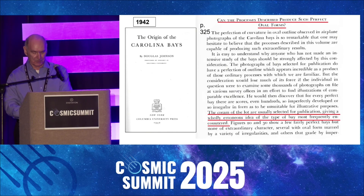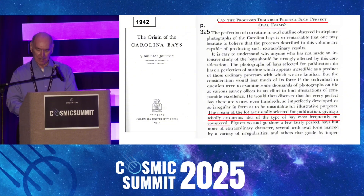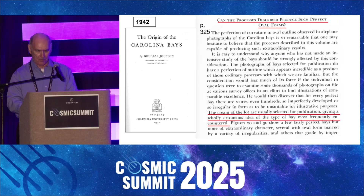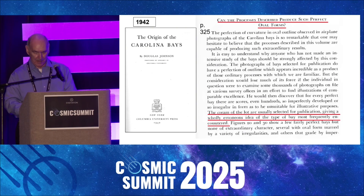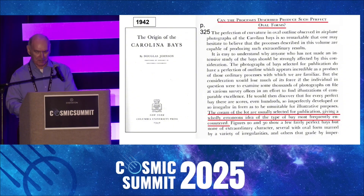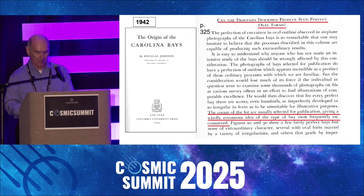In 1942, Douglas Johnson, a professor of geology at Columbia University, wrote a book about the origin of the Carolina Bays. Johnson refused to consider the elliptical geometry of the bays, and throughout the book he referred to the bays as having an oval form. He claimed that images selected for publication are specifically chosen for their excellent regularity, and that this gives a completely erroneous idea of the type of bays that are most frequently encountered. Johnson proposed that the Carolina Bays formed by a combination of wind and wave action on lakes formed from Artesian Springs.